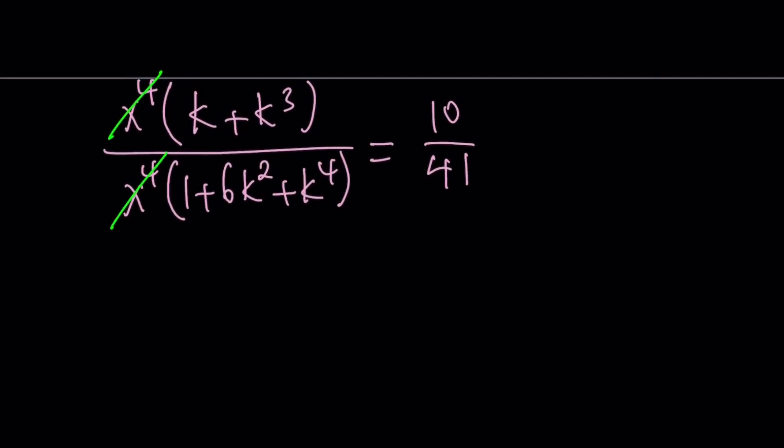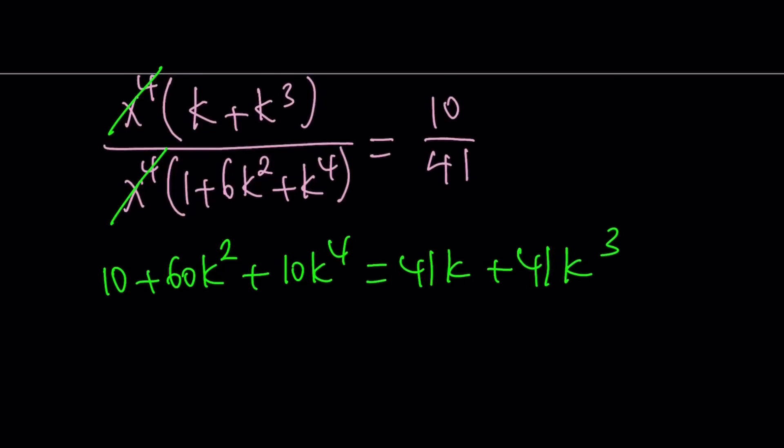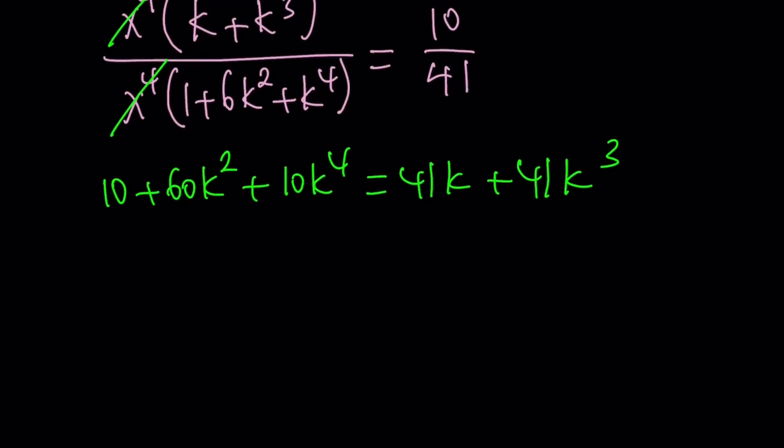This doesn't look very good now, but we're going to be able to simplify this and basically reduce this into a single variable equation. Now this becomes a quartic equation in k. If you cross multiply, you get 10 plus 60k squared plus 10k to the fourth power equals 41k plus 41k to the third power. And putting everything on the same side, you get 10k to the fourth minus 41k to the third plus 60k squared minus 41k plus 10 equals zero.